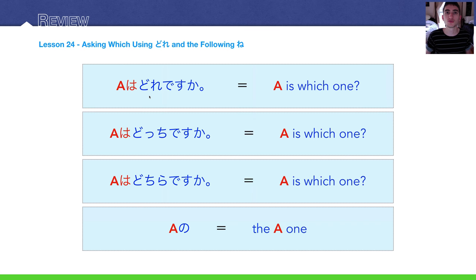Lesson 24, asking which using dore and the following no. So, dore means which one which. But, it has other forms. Dochi and dochira. Dore is normally used for a list of items, three or more. Dochi is normally used for a list of items, two or more. I have actually seen dochira used for both to replace dore and dochi.